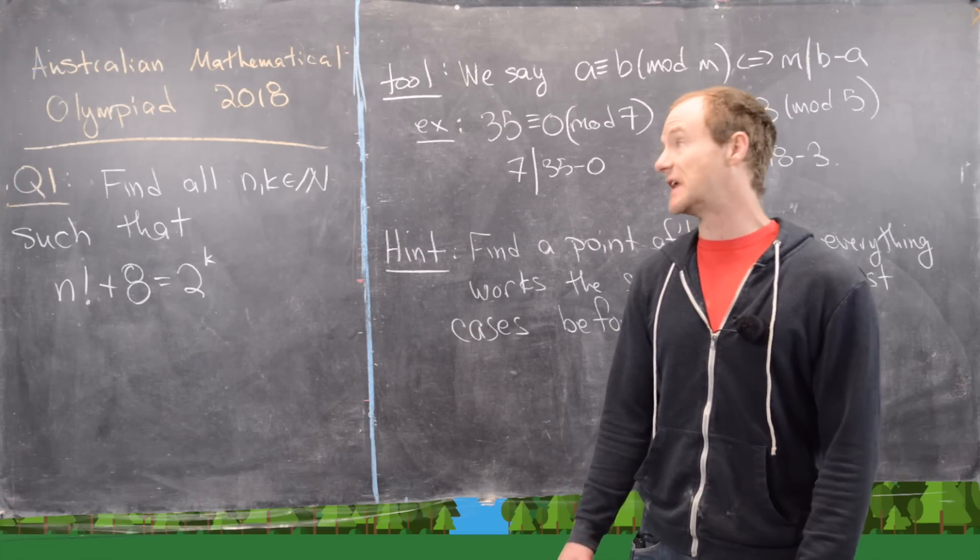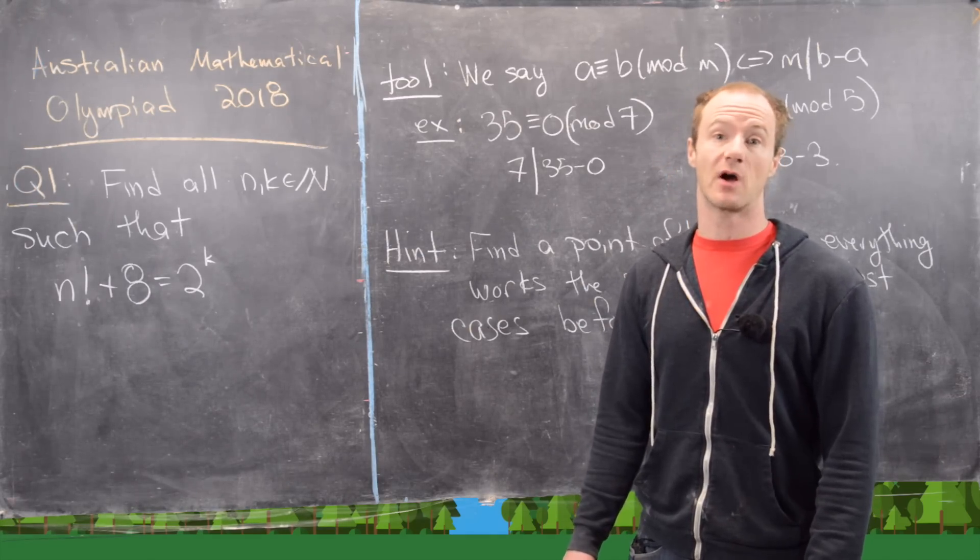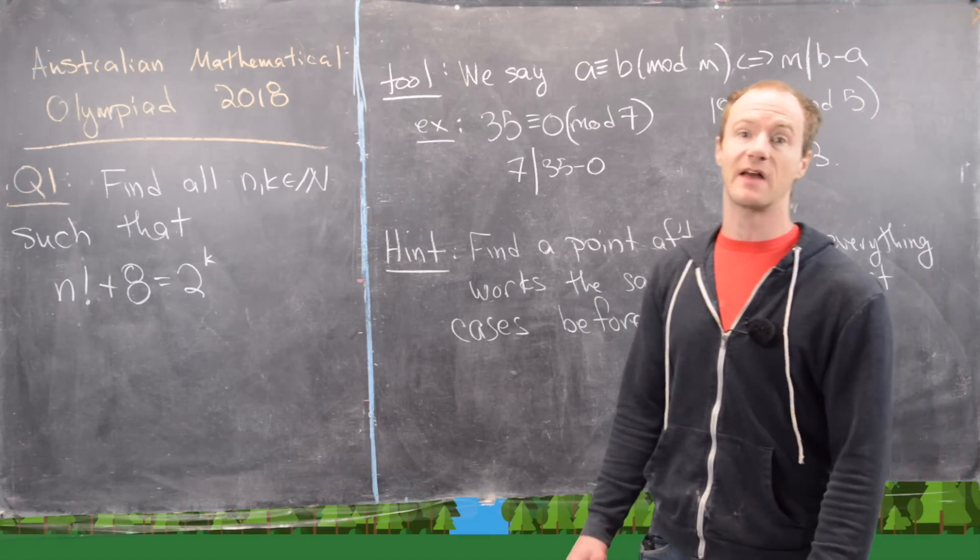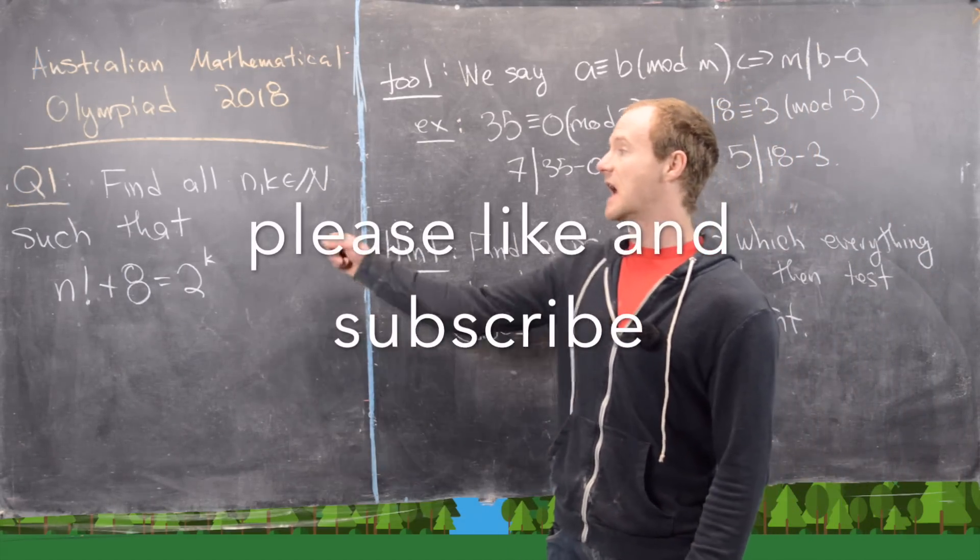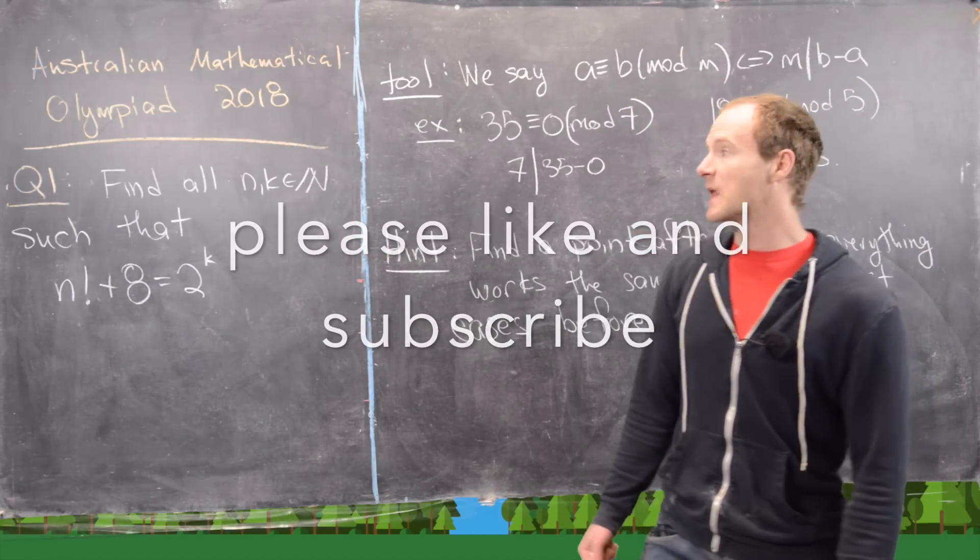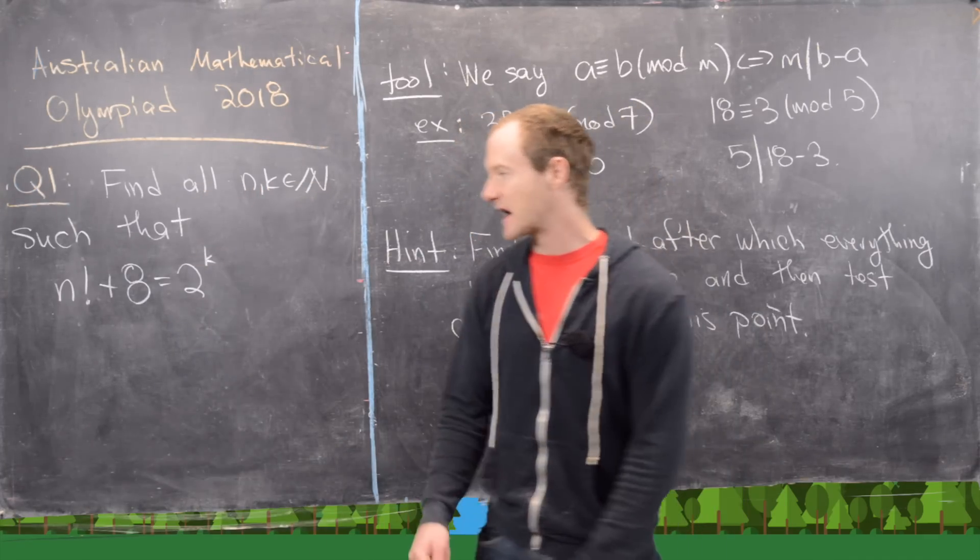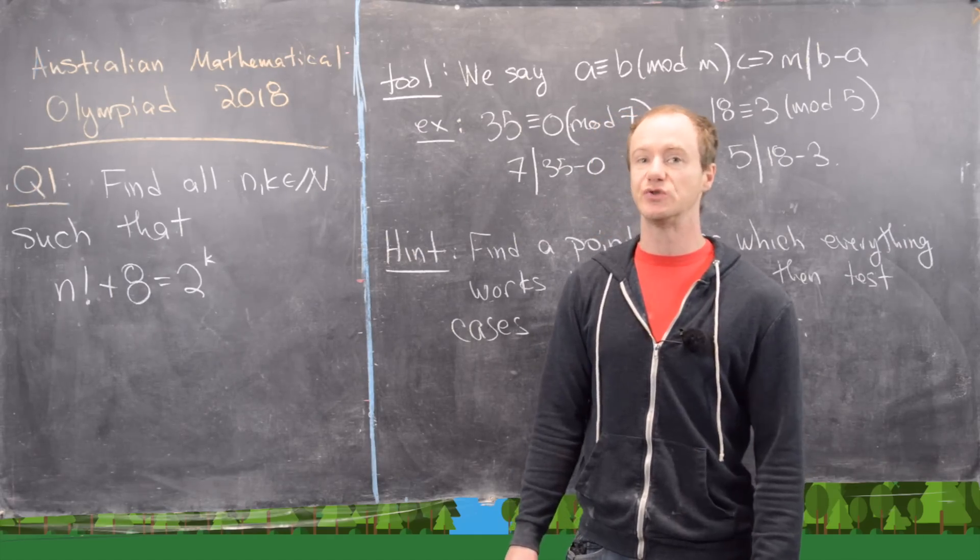Continuing on our tour of different nations mathematical Olympiad problems, we're going to look at a problem from the Australian Mathematical Olympiad from 2018, and this is question number one. And the goal is to find all natural numbers n and k such that n factorial plus 8 equals 2 to the k.